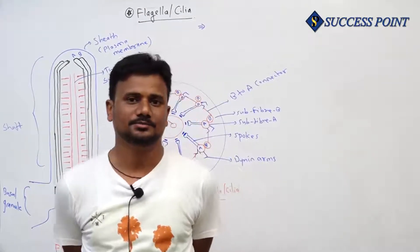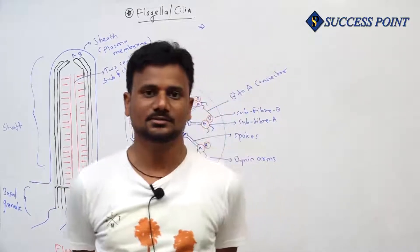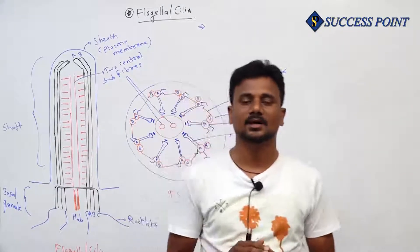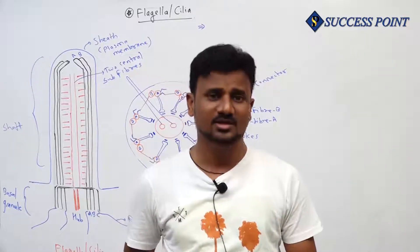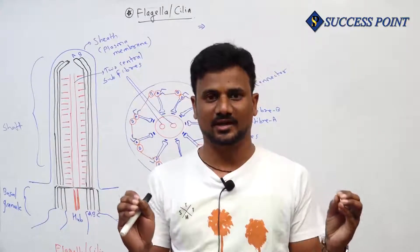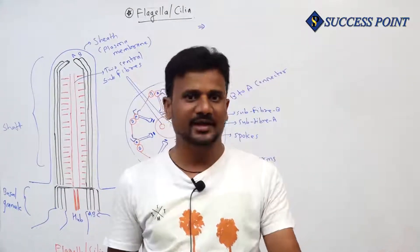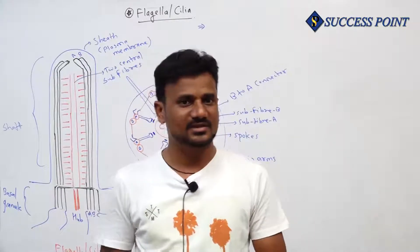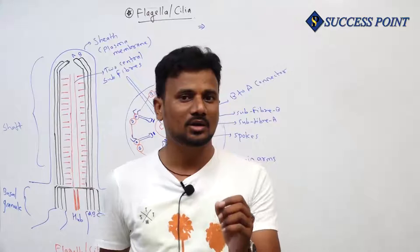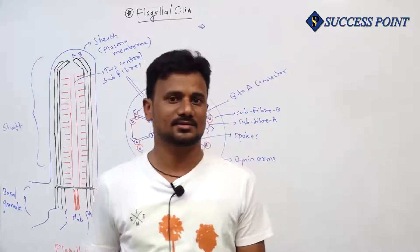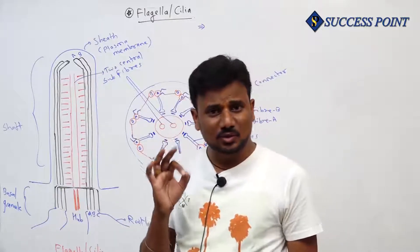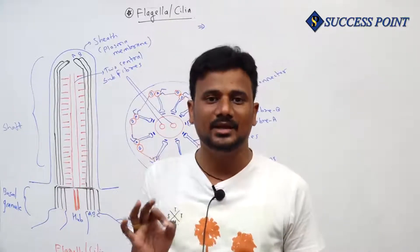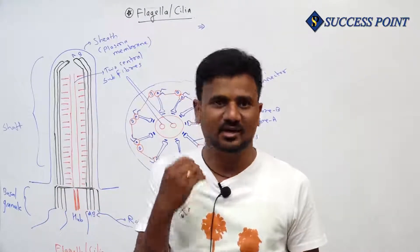Good morning everyone. We are describing the chapter on cell organization, discussing different types of structures related to cells. As already discussed, prokaryotic and eukaryotic cells are the two principal types of cells. Right now we are discussing eukaryotic cells and their different components. Today's discussion is based on a very important structure lying within many eukaryotic cells.